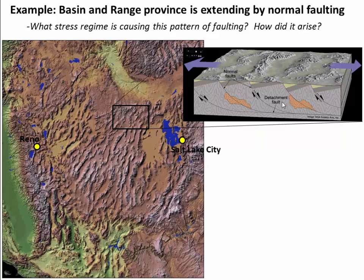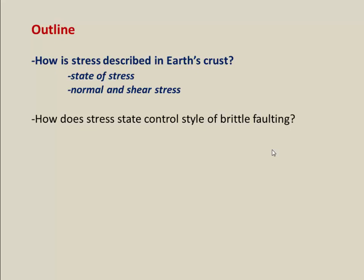All of these extensional normal faults are happening in response to, and accommodating, east-west extension. In this video, we want to understand what is the stress regime that's causing this east-west extension — where did it come from and what does it look like? We'll start by talking about the basics of how the state of stress is described in earth's crust, and then finish by looking at how that state of stress can control the style of brittle faulting and shear fracturing.